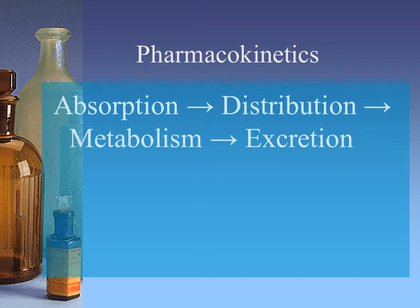There are actually four phases of pharmacokinetics. The first phase is that of absorption. In absorption, this is where the medication is actually entering into the bloodstream. Depending on the form that you've taken, it may come in quicker or slower, and depending on the route in which it has entered the body, it may go into the bloodstream faster or slower. At the point where it starts entering the bloodstream, it is being absorbed and it's in the process of absorption.